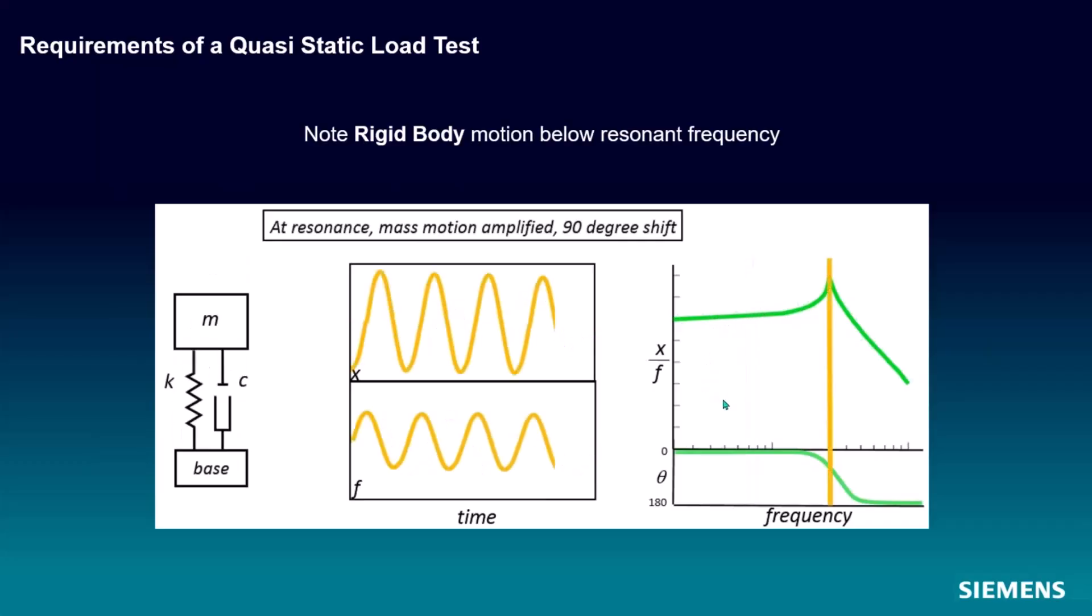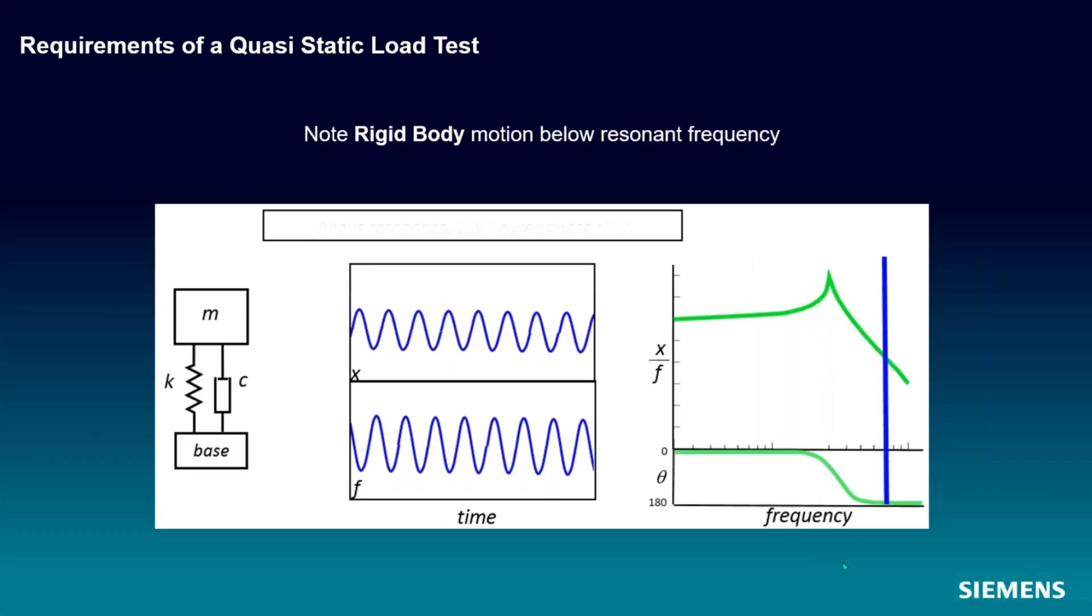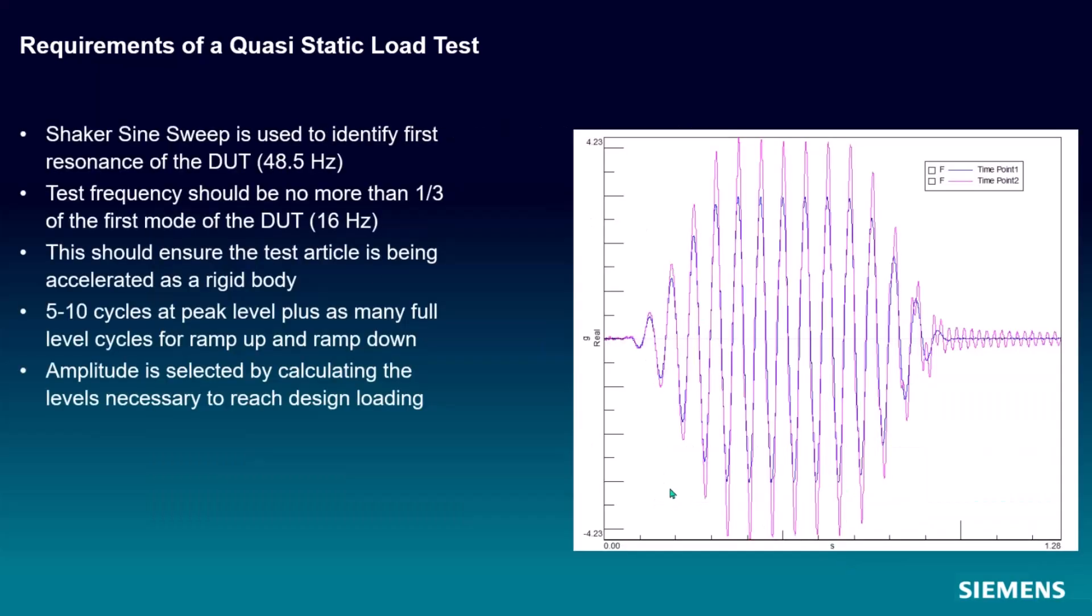So if we're down here, we're going to be doing rigid body motion and not seeing some amplification. We can play around with that in a little bit on the shaker and I can show you exactly what we mean by that. After we figure out what that frequency needs to be, then what we're typically looking at is 5 to 10 cycles at that frequency at the full amplitude level that you want with about as many cycles for ramp up and ramp down. And that's what we see over here, right? A couple cycles to ramp up, a couple cycles at full level, and a couple cycles to ramp down.